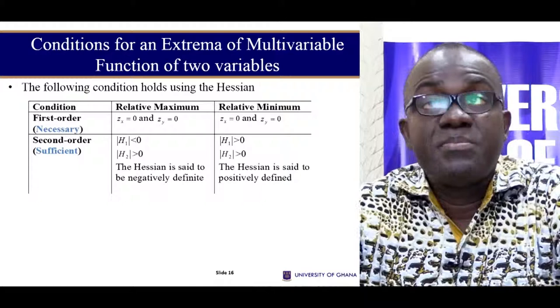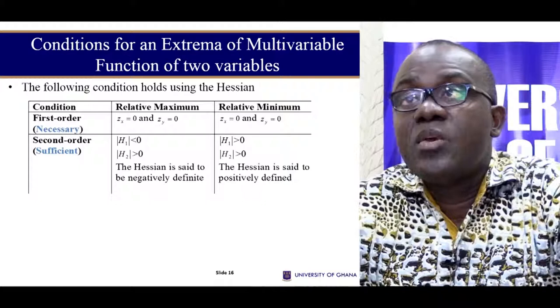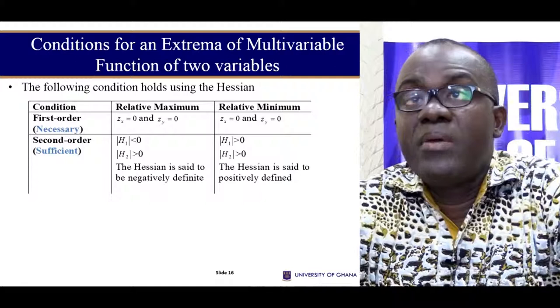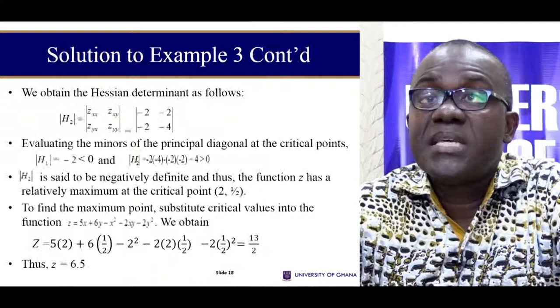So you have to evaluate this matrix determinant. If it's less than zero and you have the alternating sign, then you're talking about negatively defined and therefore a maximum is attained. When they are all greater than zero, it means it is positively defined and we are talking about relative minimum. I have a simple example here. You can go through yourself — just that here you would be using the Hessian determinant. I take my cross partials, I form my determinant, I evaluate at the point, and then I determine whether it's a maximum or minimum.